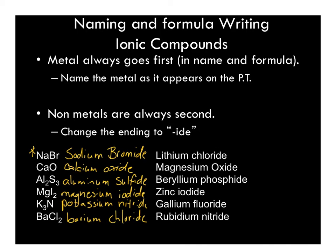Going the other way — from name to formula — we do need to pay attention to the numbers and the charges. So we have lithium chloride. Lithium is in the first column of the periodic table, so it gets a plus 1 charge. Chloride is in the second-to-last column of the periodic table, so it gets a minus 1 charge. Lithium gives one electron to chlorine, they balance each other out, and the formula is LiCl.